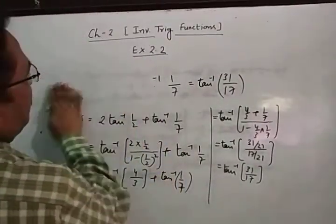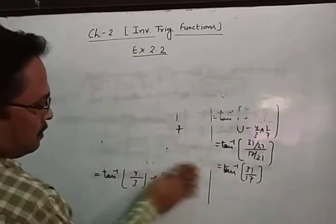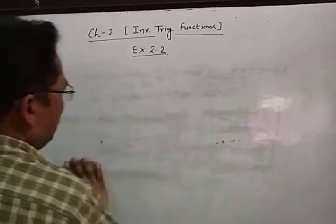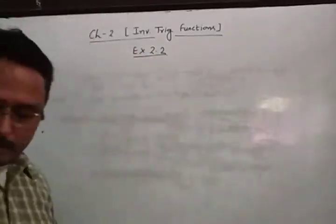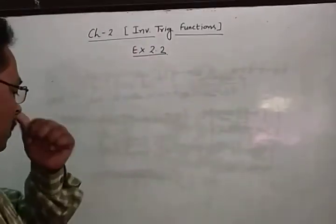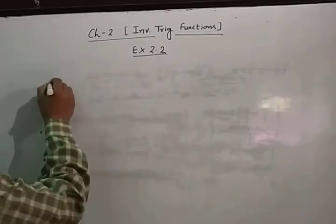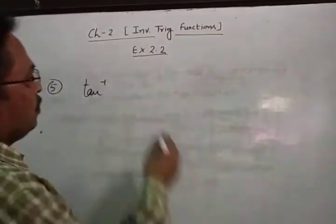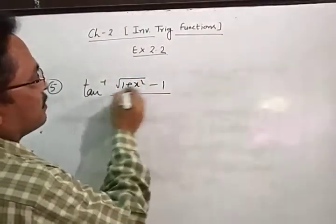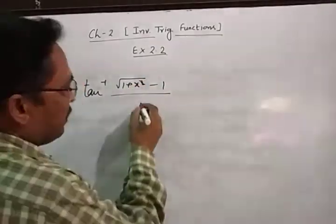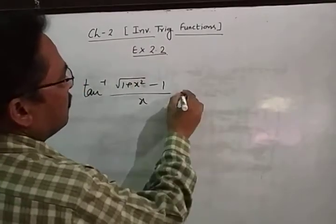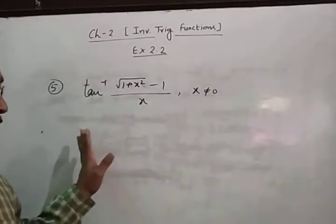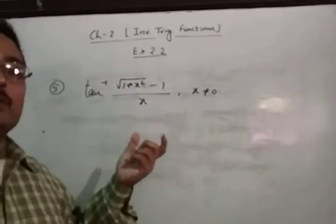Question 5: in these questions, we have to simplify — convert to the simplest form. Question 5 is tan⁻¹((√(1+x²) − 1)/x), where x ≠ 0. We have to convert this expression into its simplest form.